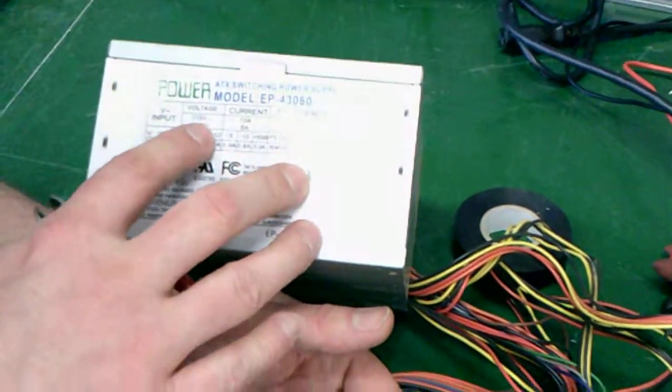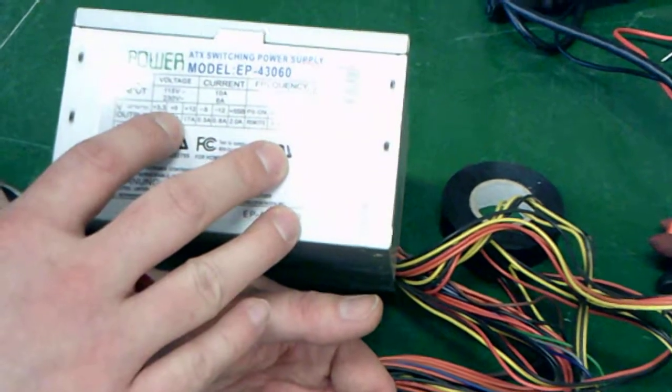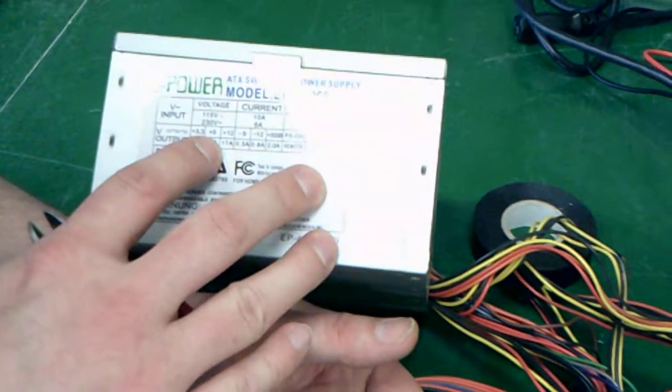You'll see right here on the 12 volt rail it's giving out 17 amps. This is plenty enough for our project.